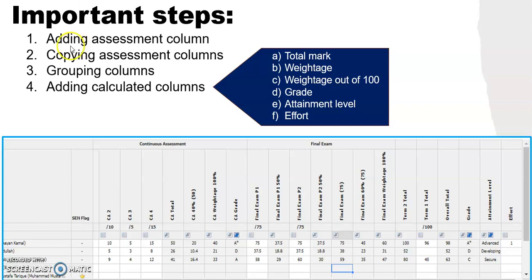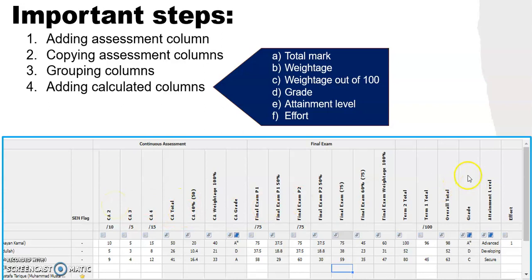These are the main steps to complete a gradebook: adding assessment columns, copying the columns and grouping multiple columns together, and adding calculated columns like the ones listed here. By the end of the creation of a gradebook, your gradebook will have these many columns as you can see in the screenshot. Our school is following a naming format, so if you have any doubts regarding the naming format, you can always reference this screenshot. This PPT will be attached to this video as well.